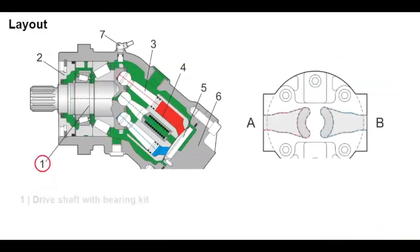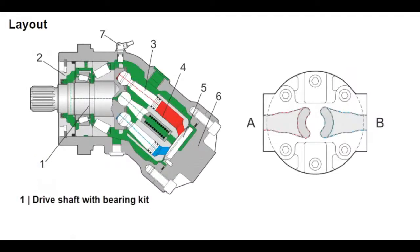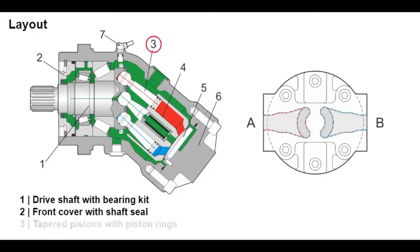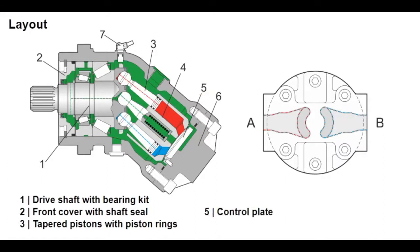The bearing kit, which absorbs forces acting in the axial and radial direction, is assembled on the driveshaft (1). A shaft seal (2), clamp collar and snap ring installed in the housing, are used to seal the motor. The one-piece tapered pistons (3) catch the cylinder without the need for a driveshaft. Due to the spherical surface of the control plate (5), torque-free support of the cylinder (4) is provided.